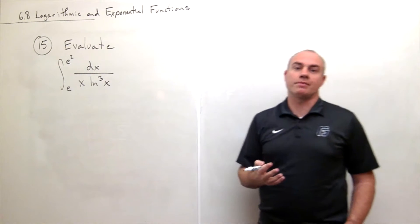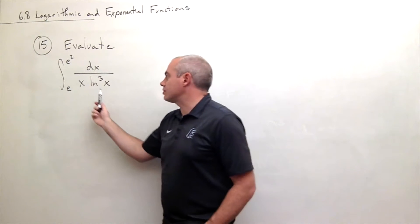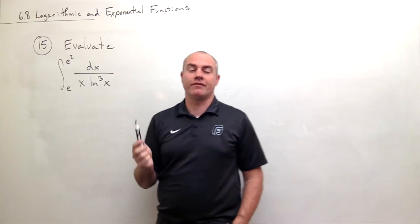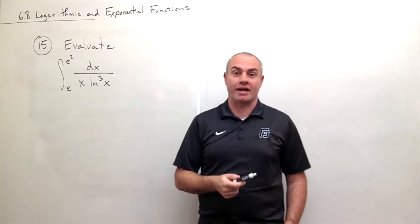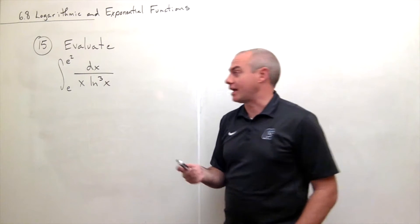So this is going to be a u substitution problem and for this u substitution I see I have ln of x sitting right here and the derivative of ln of x is 1 over x dx. So I can use a u substitution on the ln x.